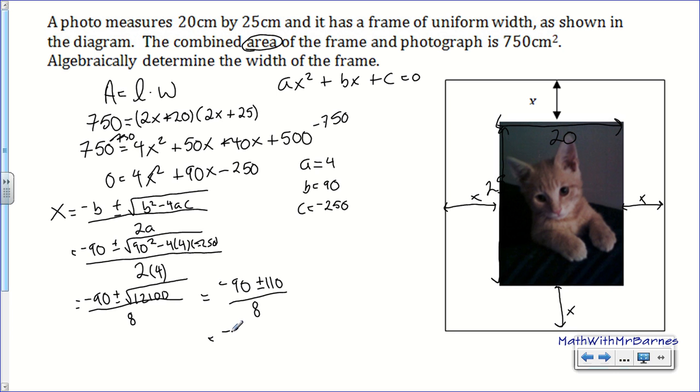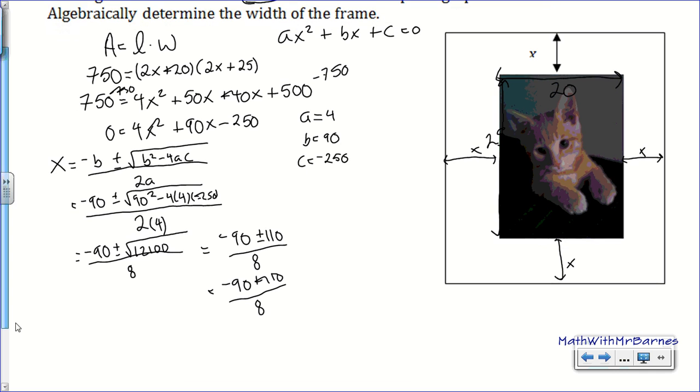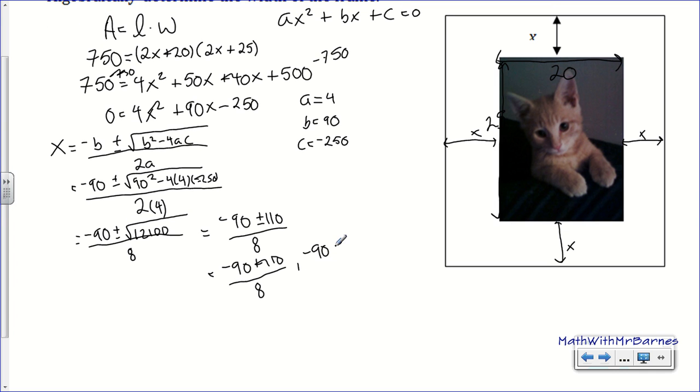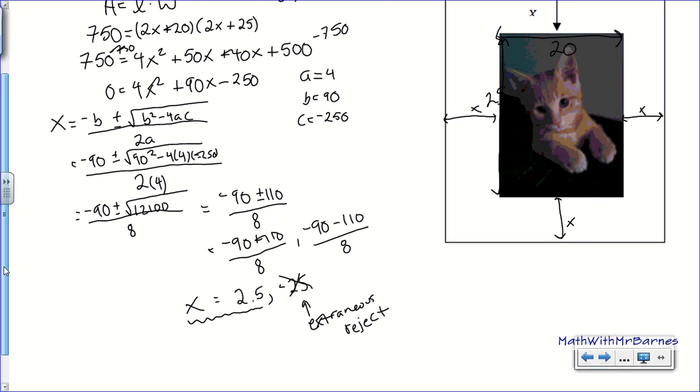So the square root of that is going to be 110. So negative 90 plus or minus 110 divided by 8. So I have to do negative 90 plus 110. And then I'm just showing you for the sake of what I'm going to do in my calculator, okay? So I have negative 90 plus 110 all divided by 8 says 20 divided by 8. So that's 2.5. So these are x values, by the way, x equals. And then this one's going to be an extraneous root because it's going to be negative. So negative 200 divided by 8 is negative 25.